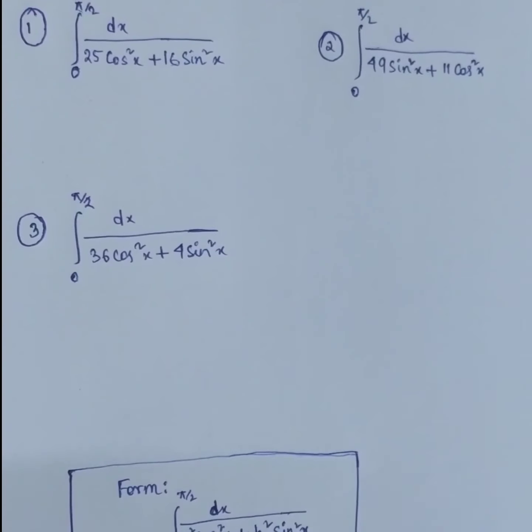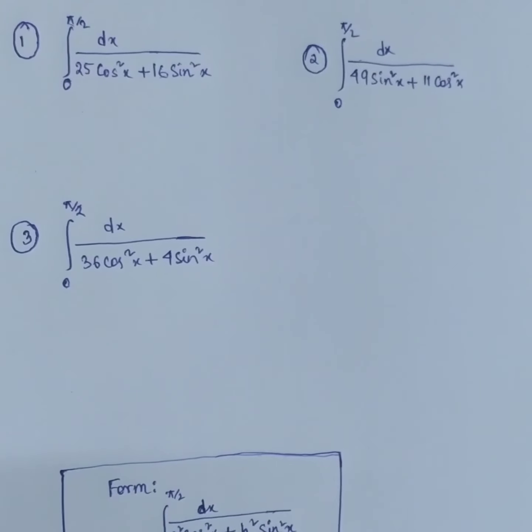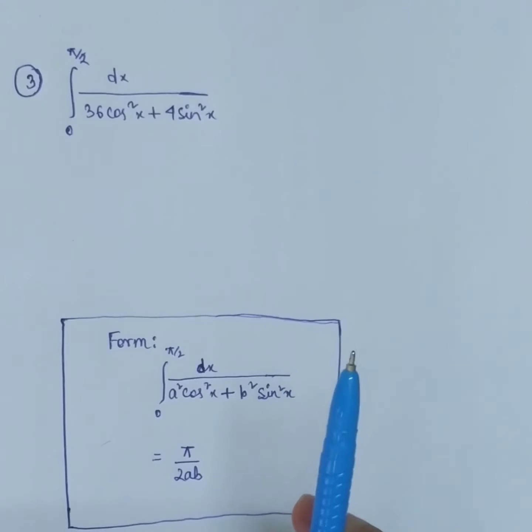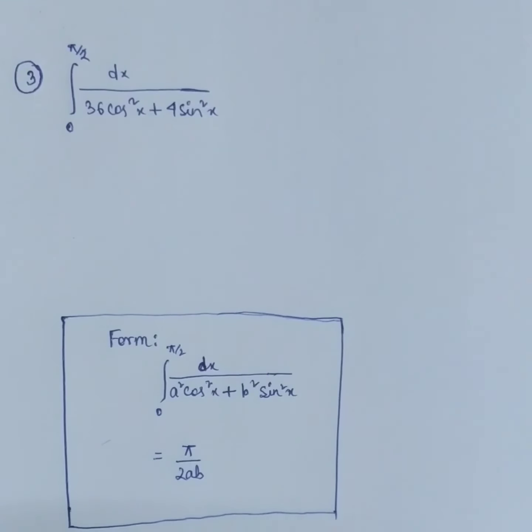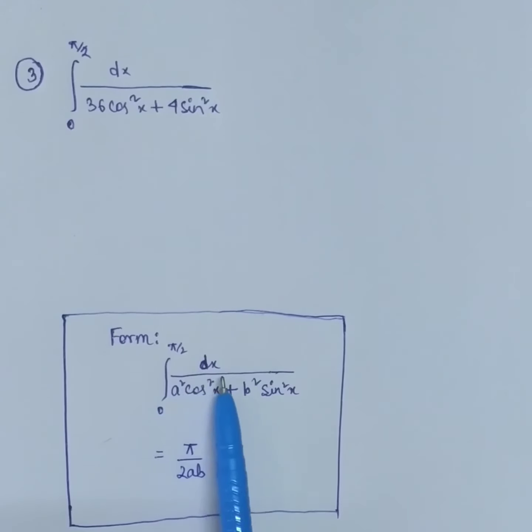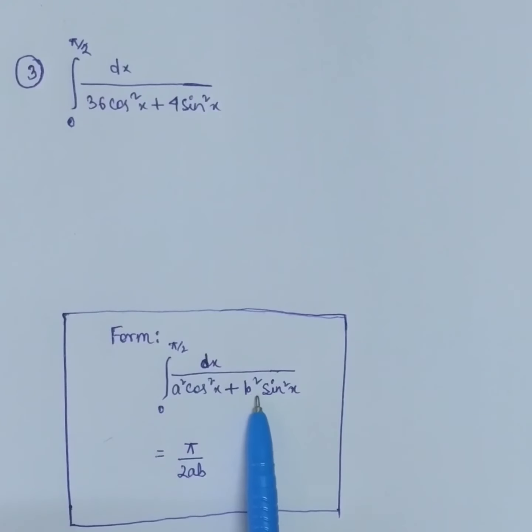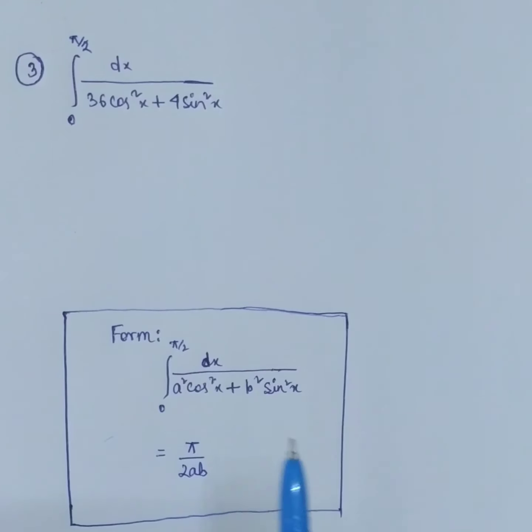So today I have an amazing formula for these three questions. So what do you have to do? Observe how is the question. So the integration 0 to π/2, dx upon a²cos²x plus b²sin²x.